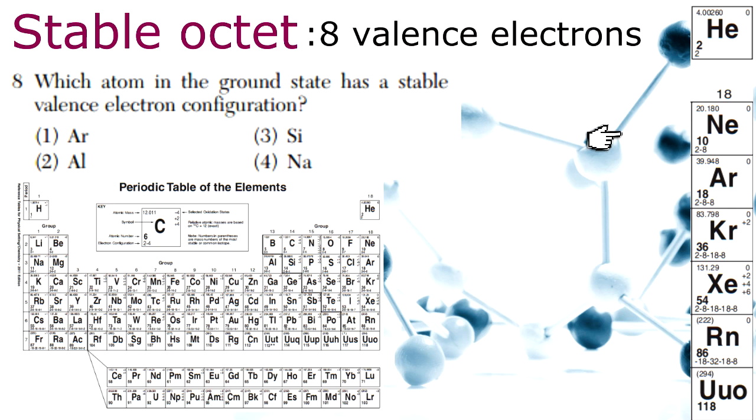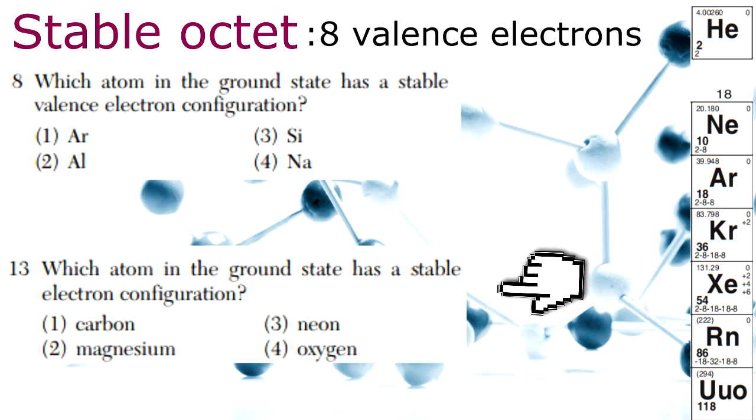Now which element from Group 18 is a choice here? The answer is argon. Let's look at this question from January 2015. Which atom in the ground state has a stable balanced electron configuration? Again, the answer is neon from Group 18.